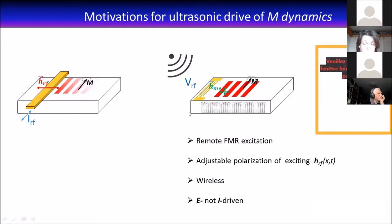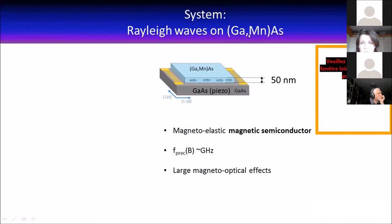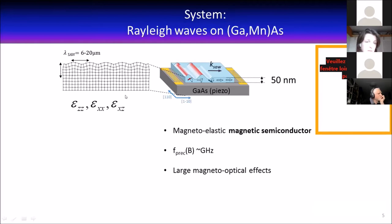The system we tried to test this concept on is gallium manganese arsenide, a magnetic semiconductor that has a fairly weak Curie temperature of about 150 Kelvin, but it has quite interesting properties. It's grown on a piezoelectric substrate, convenient to evaporate transducers on. Its typical precession frequencies are around the gigahertz, which is typically what surface acoustic wave frequencies are. It presents large magneto-optical effects convenient to detect the dynamics. Finally, when you look at the strain components excited by these surface acoustic waves, they fit very nicely the magnetoelastic energy of the material.